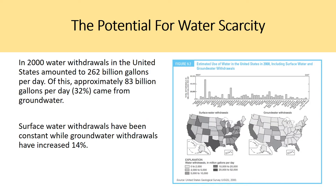In 2000, water withdrawals in the United States amounted to 262 billion gallons per day. Of this, approximately 83 billion gallons per day, or 32%, came from groundwater. Surface water withdrawals have been constant, while groundwater withdrawals have increased by 14%. Even though surface water withdrawals — the renewable side — have remained constant, groundwater withdrawals — the depletable side — have increased. Therefore, eventually we're going to run out of groundwater.